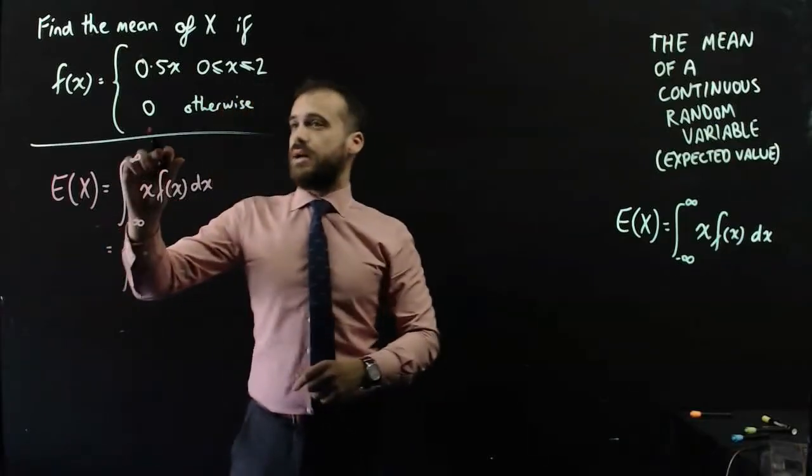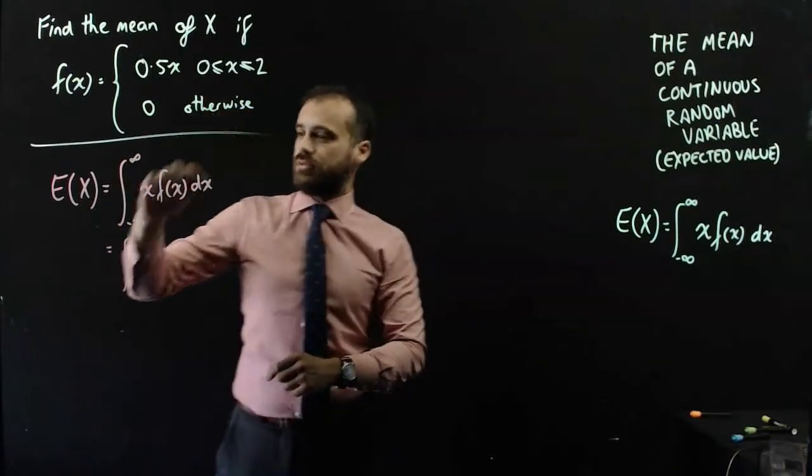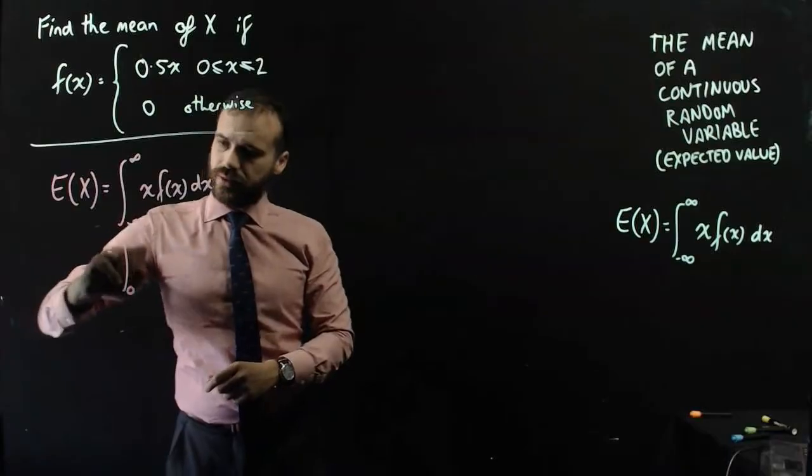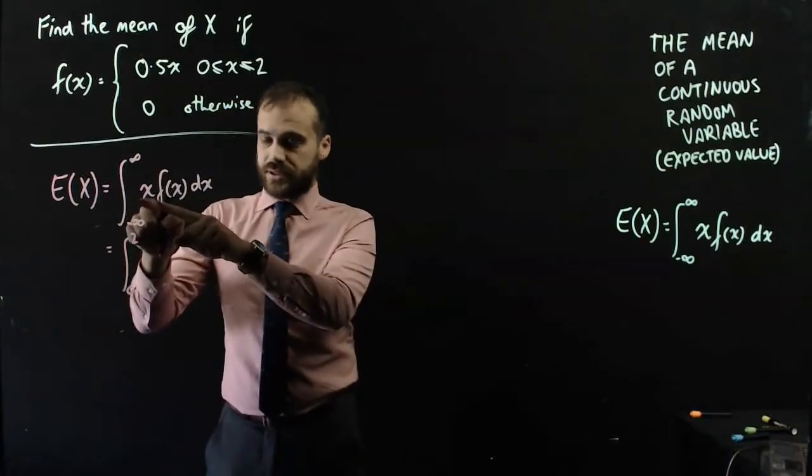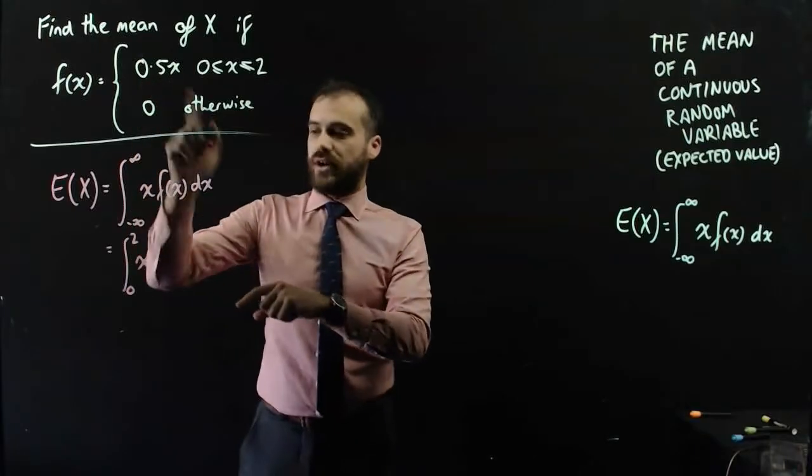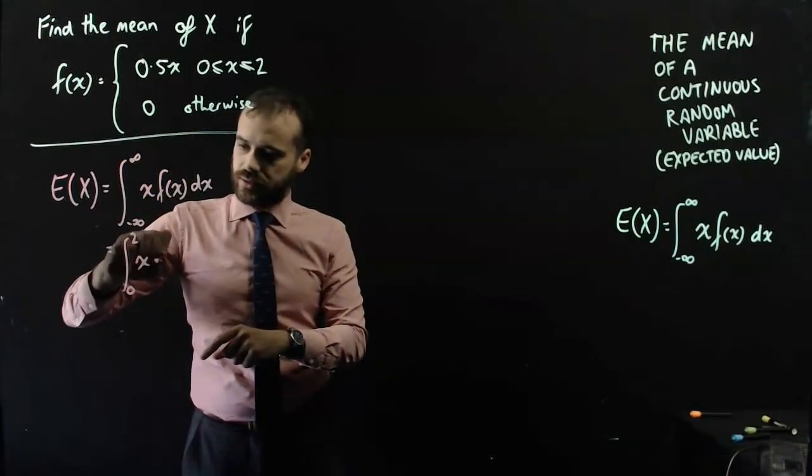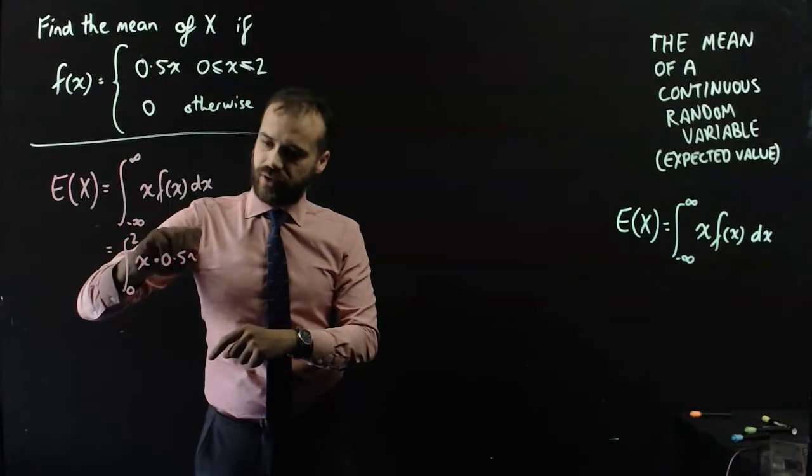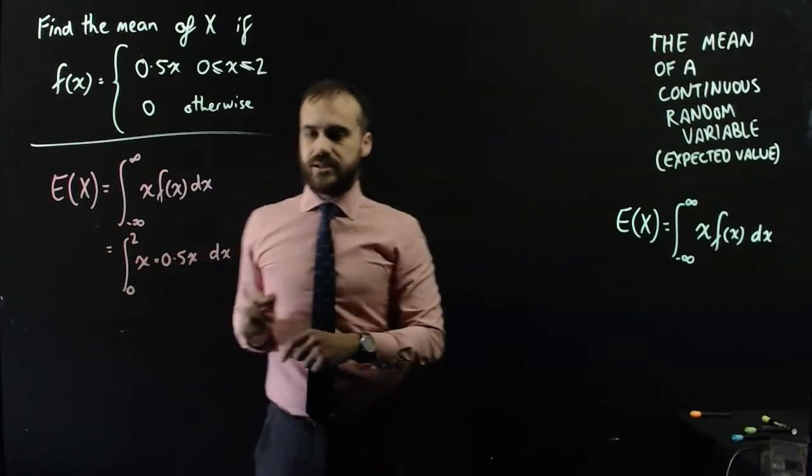what really matters is going from 0 to 2, and then we take x and we multiply x by our function, times 0.5x. And we do that with respect to x.